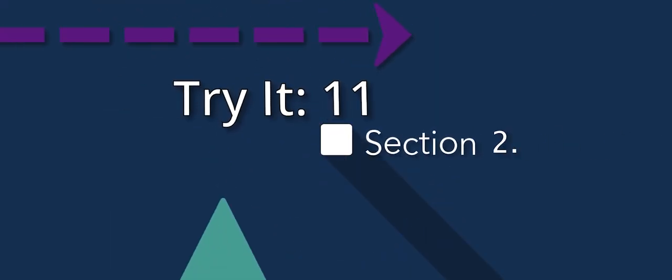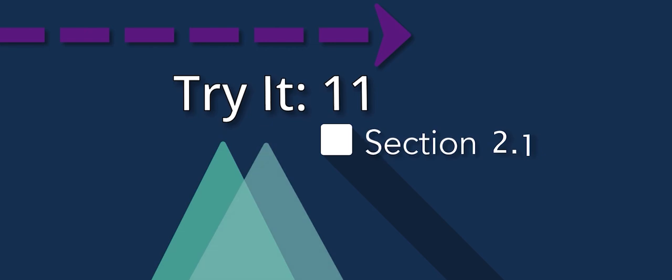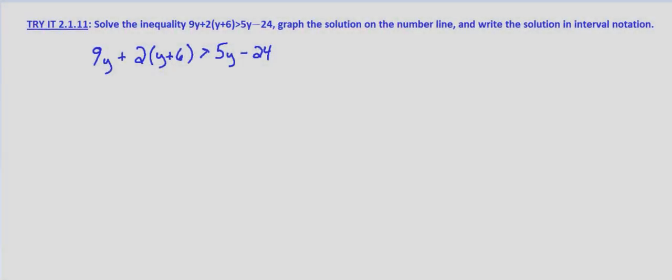With this inequality we're given 9y plus 2 times the sum of y plus 6 is greater than 5y minus 24.